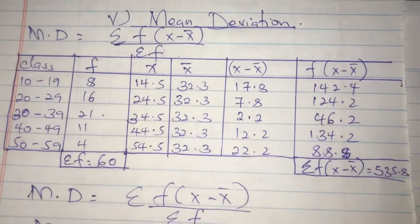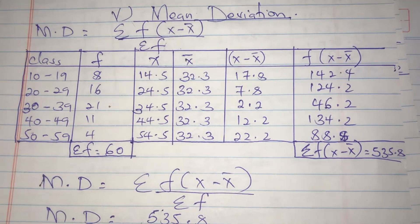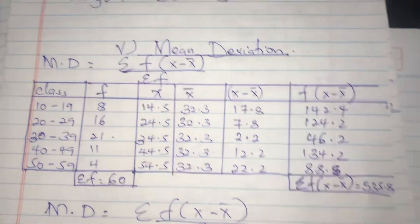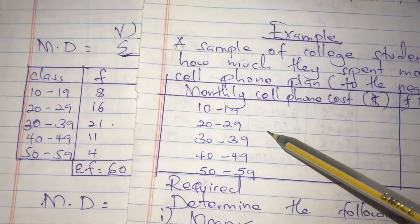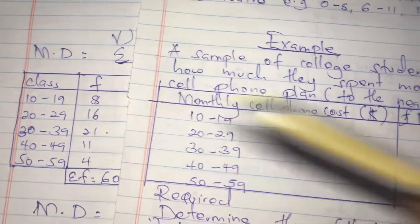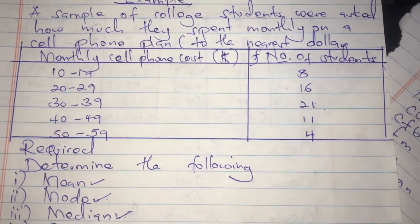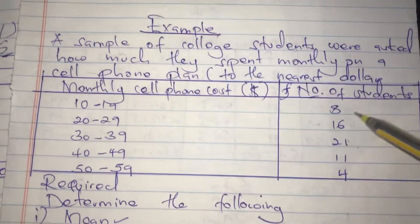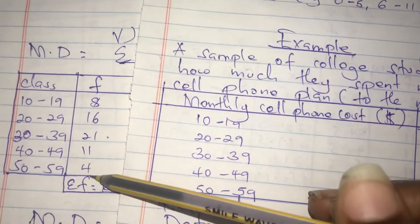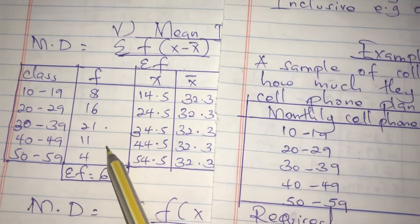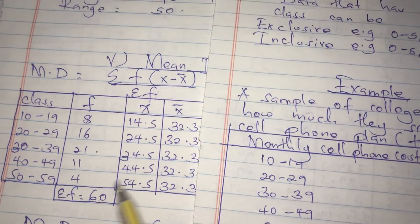We do not forget the column of class, because that is the first thing we do when handling such questions — we start with the column of class and copy it as given in the question. The frequency is also given, representing the number of students. We put it here, and summation f we had already calculated as 60.